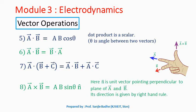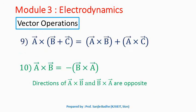The direction of a bar cross b bar will be perpendicular to the plane of a bar and b bar, and is given by the right-hand rule. So if this is the direction in which a bar is pointing and this is the direction in which b bar is pointing, then perpendicular to the plane of a bar and b bar will be the direction of the resultant a bar cross b bar. Cross product also follows the distributive law: a bar cross (b bar plus c bar) equals a bar cross b bar plus a bar cross c bar. And a bar cross b bar equals minus b bar cross a bar, meaning the directions of a bar cross b bar and b bar cross a bar are opposite — unlike dot product, where a bar dot b bar equals b bar dot a bar.